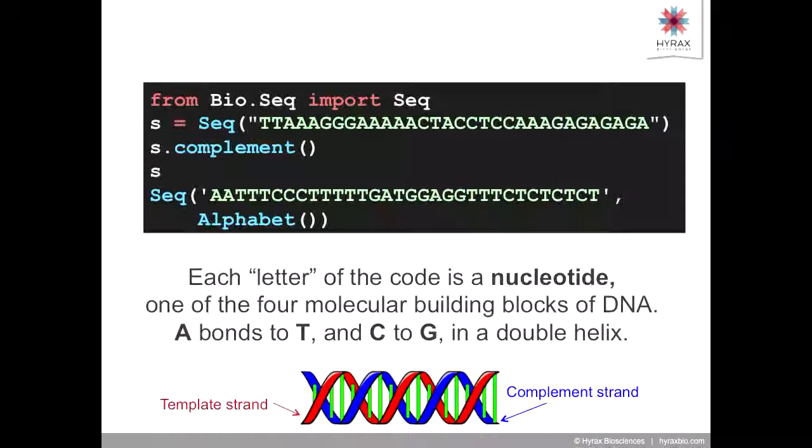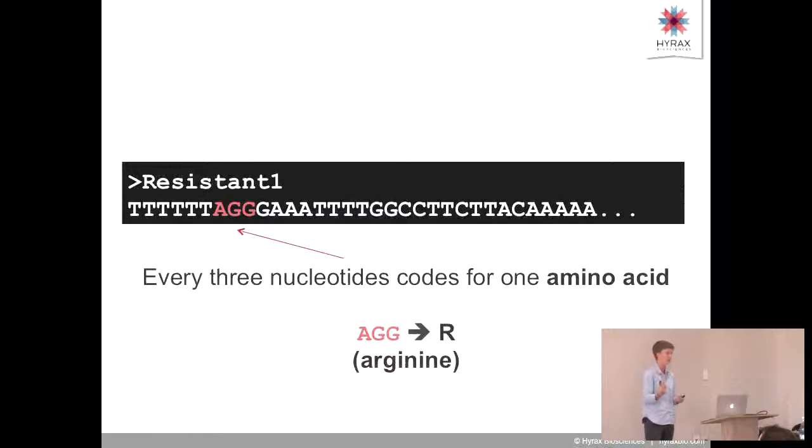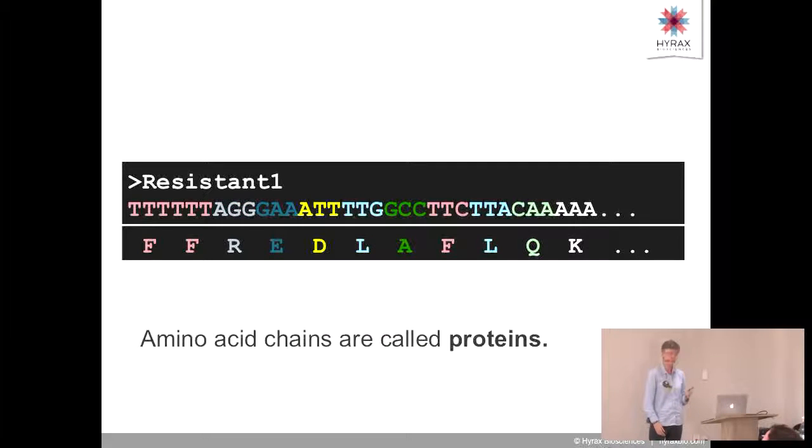How this code works is every three nucleotides codes for one amino acid. So AGG codes for arginine, which is an amino acid with letter R. When these amino acids are translated, they're translated in chains, and that chain of amino acids we call a protein. So we have a string of nucleotides that gets translated by your body into a string of amino acids, which is a protein. That's the whole code of life up there on that slide.